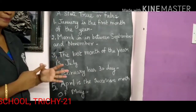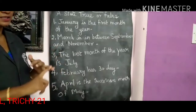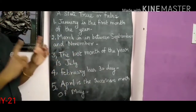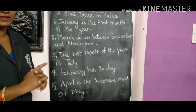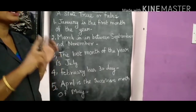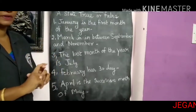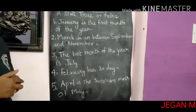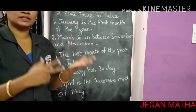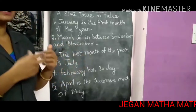February, March, April, May, June, July, August, September, October, November, and December. The first month of the year is January and the last month of the year is December. Another important thing: February has 28 days, and in a leap year February has 29 days. That is important.